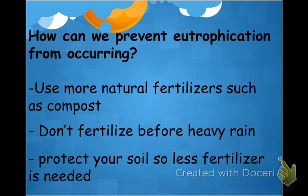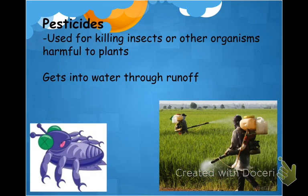Eutrophication will come up in at least two more units, so make sure you know it. To prevent eutrophication, a big step is to use natural fertilizers such as compost rather than chemical ones. Compost can be made from leftover food that decays into a natural organic layer, similar to the O horizon of soil. Other prevention steps include not fertilizing before it rains, using less fertilizer, and protecting your soil — healthy soil requires less fertilizer.